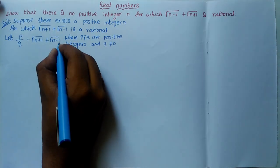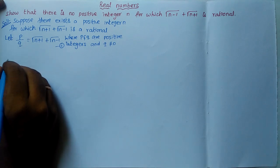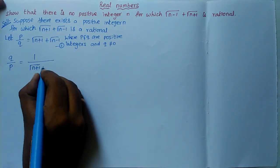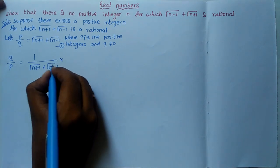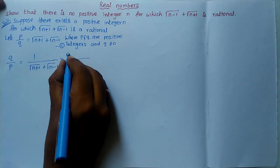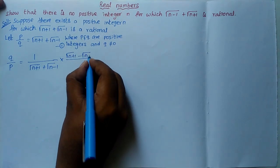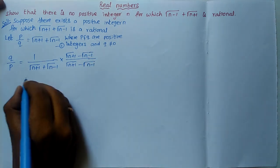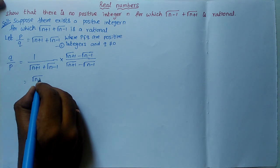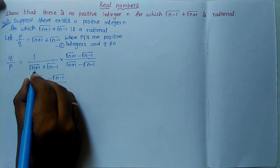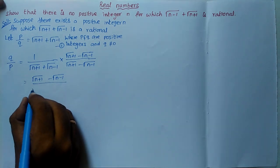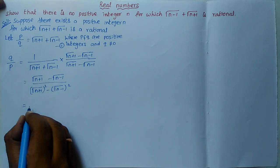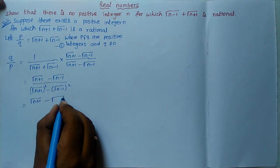Next, we take the reciprocal of Equation 1 to get q/p = 1/(√(n+1) + √(n−1)). We rationalize using the identity (a+b)(a−b) = a²−b², multiplying numerator and denominator by (√(n+1) − √(n−1)), giving q/p = (√(n+1) − √(n−1)) / [(√(n+1))² − (√(n−1))²].